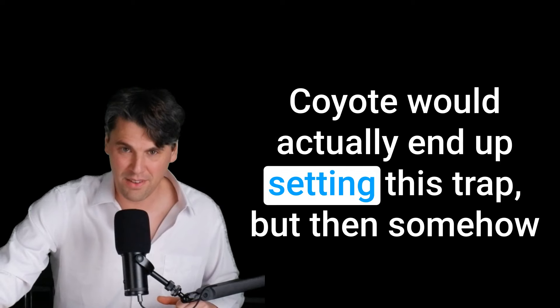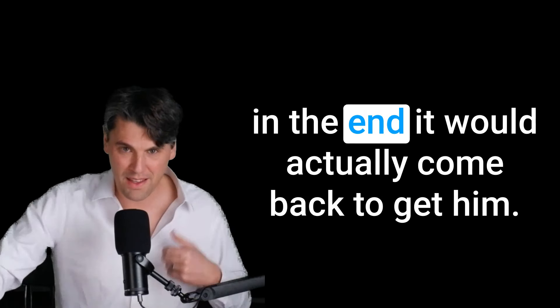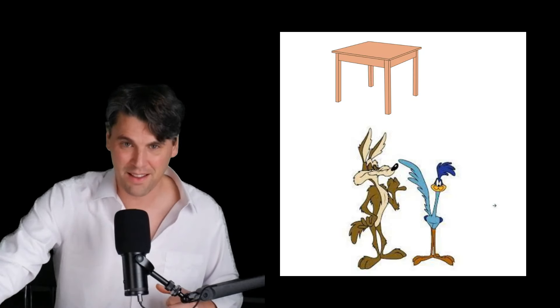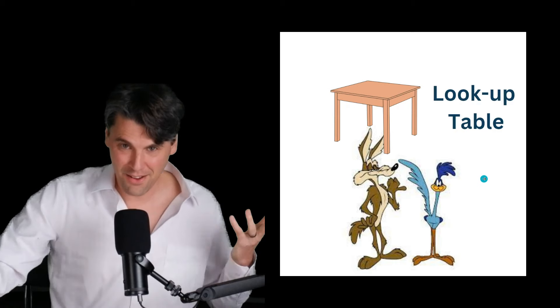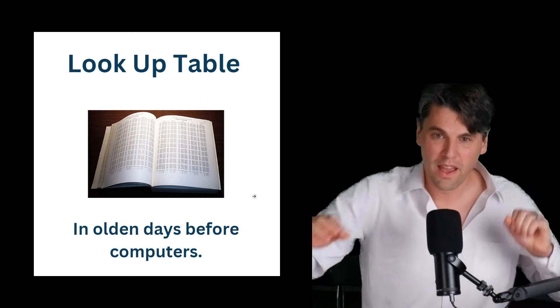And every so often, something would happen where a trap would be set. Coyote would actually end up setting this trap, but then somehow in the end it would actually come back to get him. Something like this might happen where he'd set a trap where a table would come down. And then you'd have to say, lookup table. Table's falling on you.